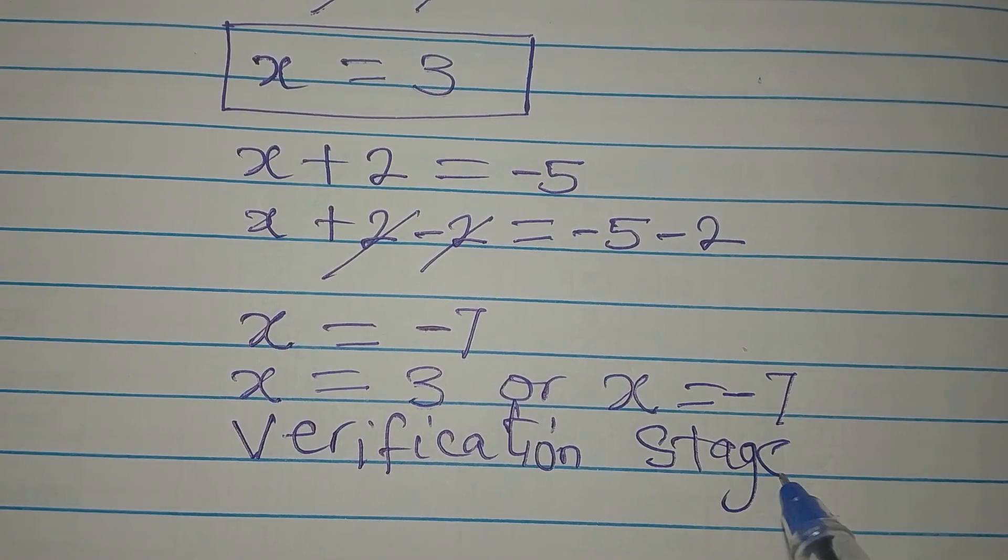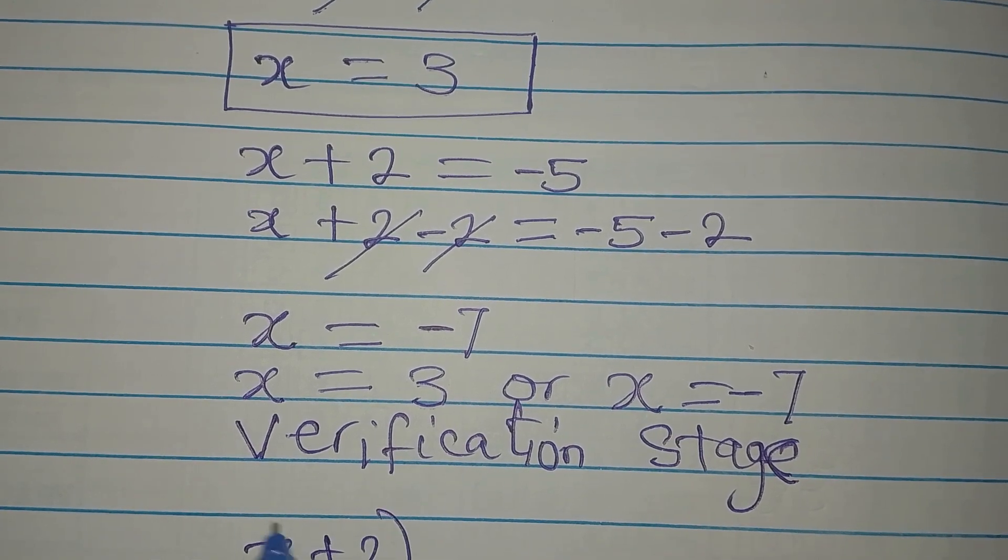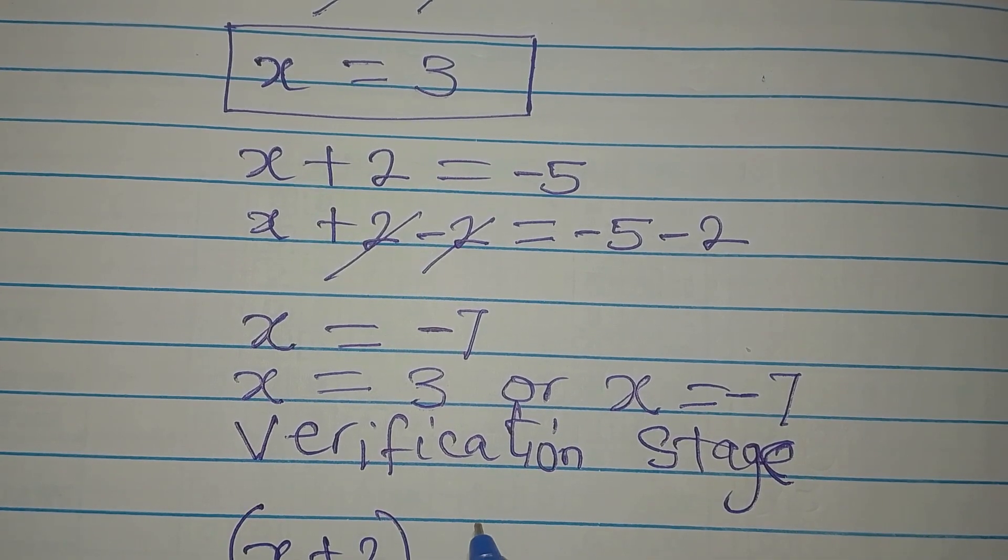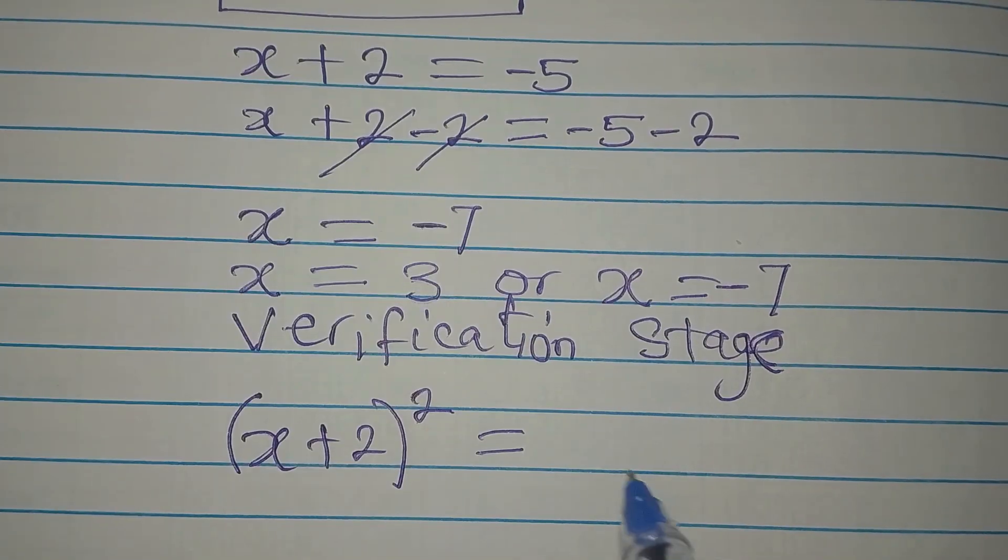The real equation is x plus 2 to the power of 2 equals 25.